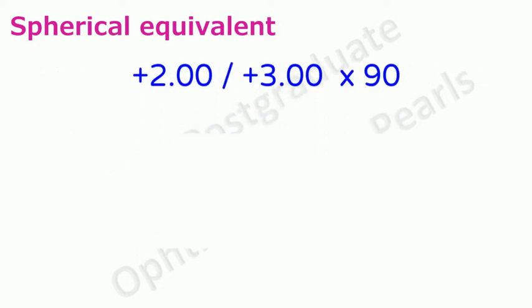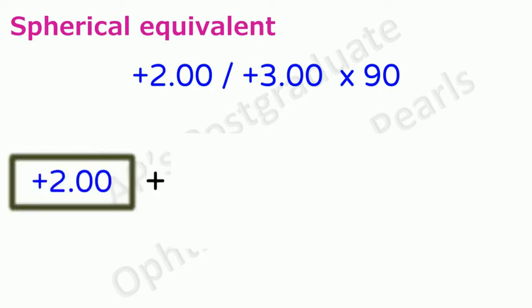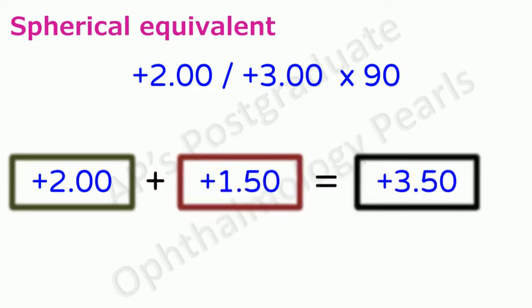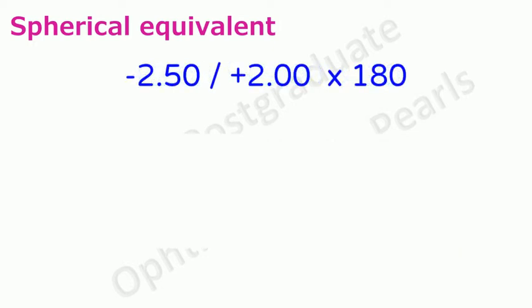We need to get rid of the cylinder. So we add the sphere and half of the cylindrical power algebraically. In this case it will be plus 2 plus half of the cylinder that is plus 1.5 to make that plus 3.5. So the spherical equivalent of this refractive correction is plus 3.5 diopters.